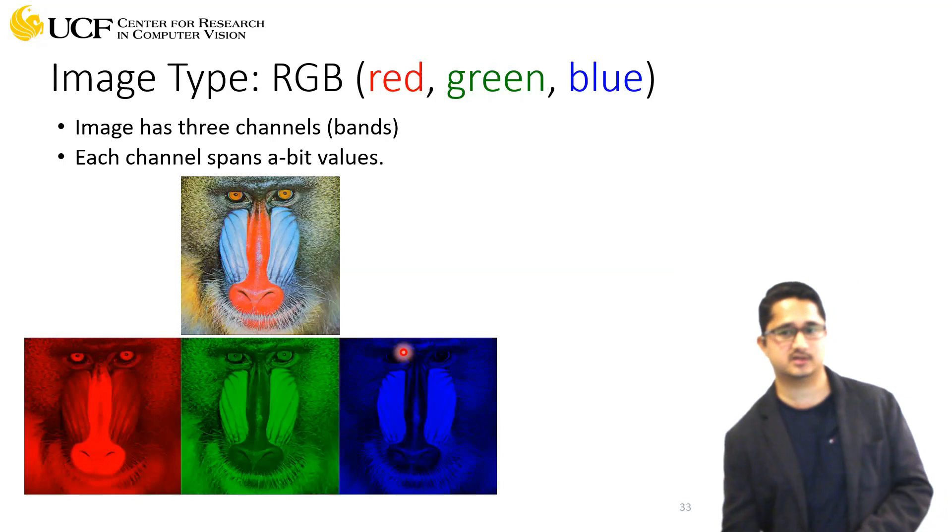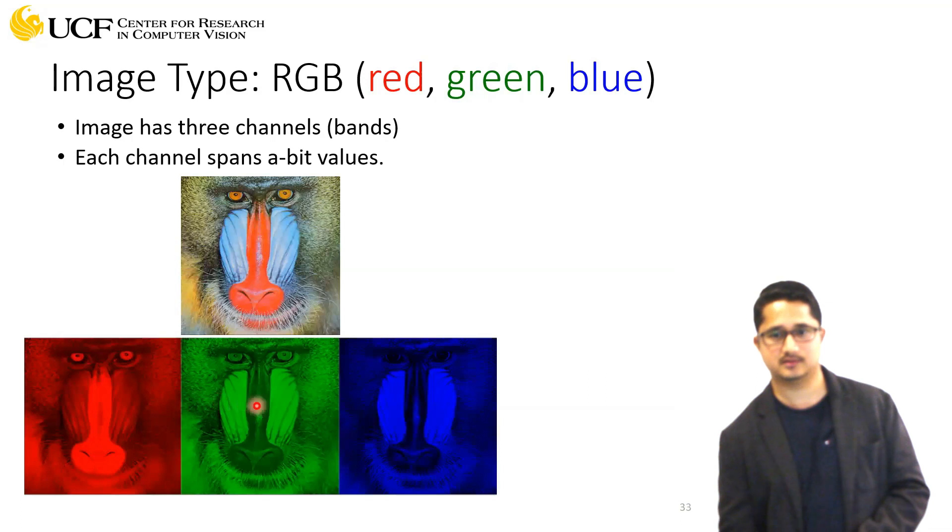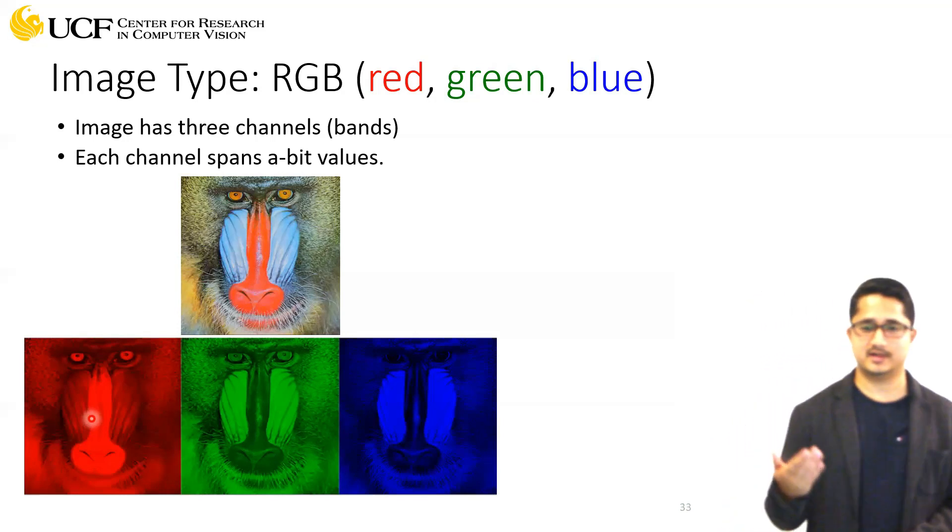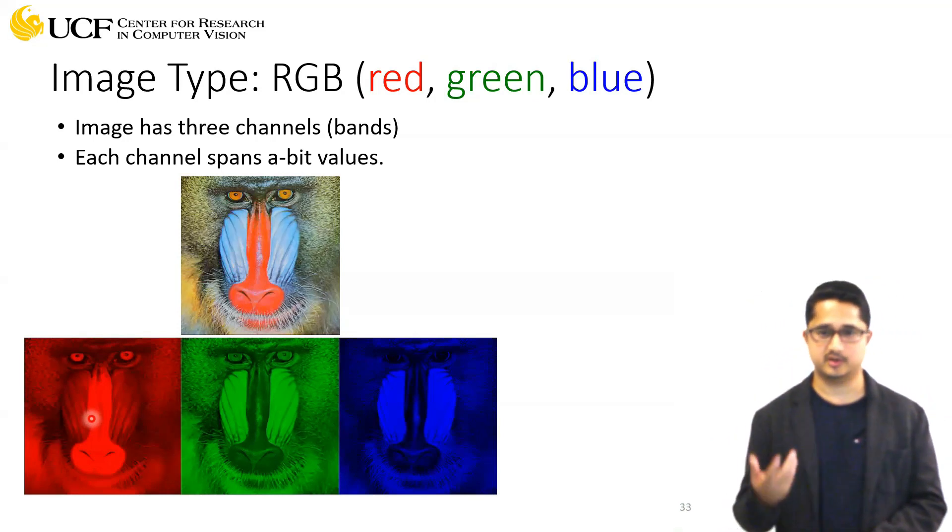RGB: R stands for red, this is green, and this is blue. Each of these images is represented exactly the same way I described the grayscale image.